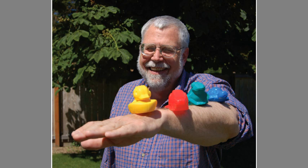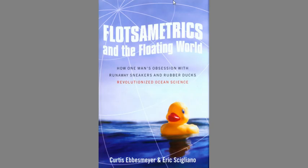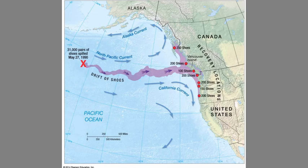There's a guy named Curtis Ebesmeyer, an oceanographer, who has made a science of studying flotsam and has even written a book about it. These little rubber duckies, for example, last for years as they float around the oceans and can be used to track ocean currents. Ebesmeyer's book is called Flotsammetrics — flotsam being floating debris and metrics being to measure. So he's using floating debris to measure and track ocean currents, and you're going to use some of Ebesmeyer's data in lab.